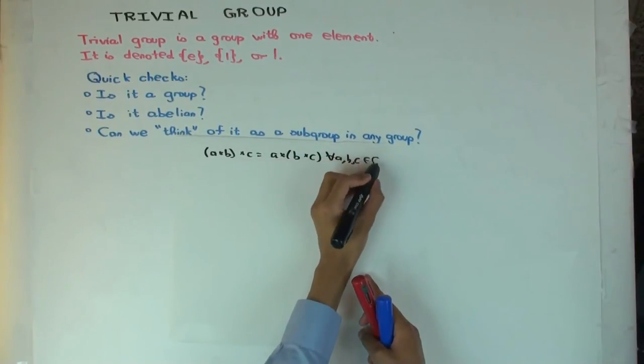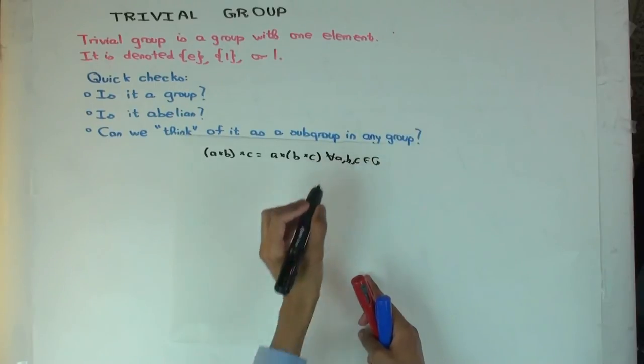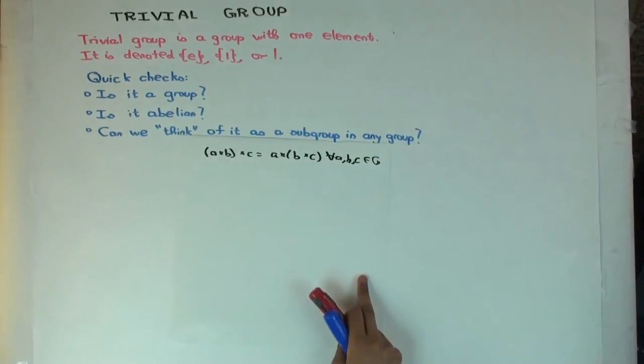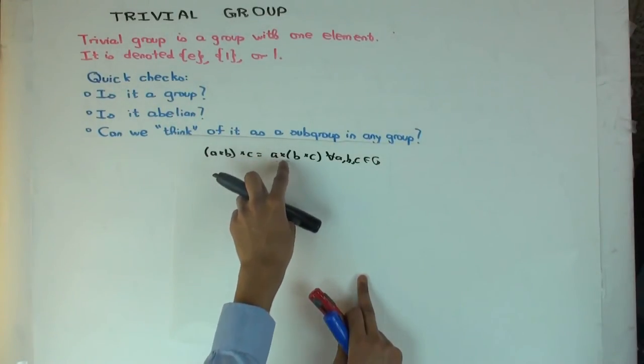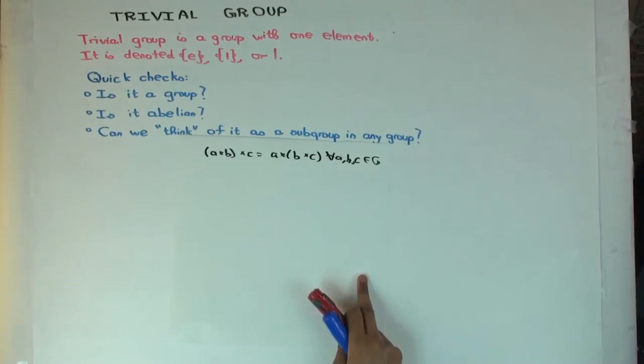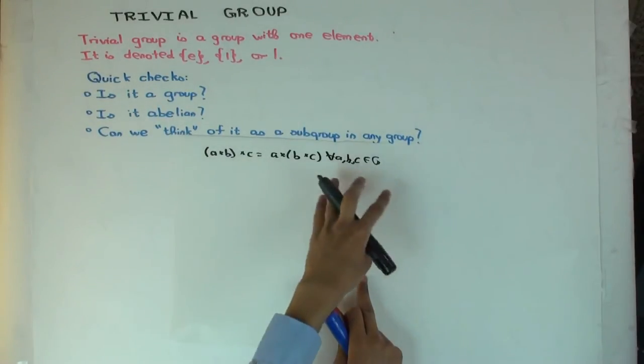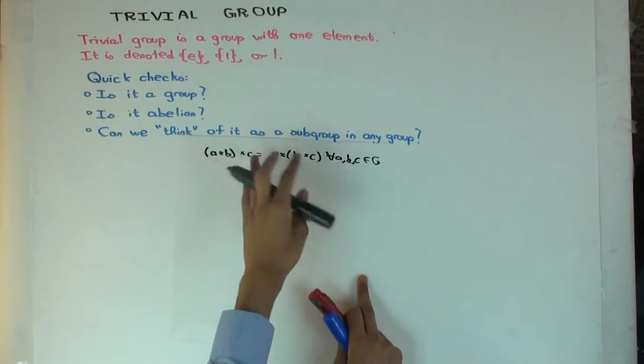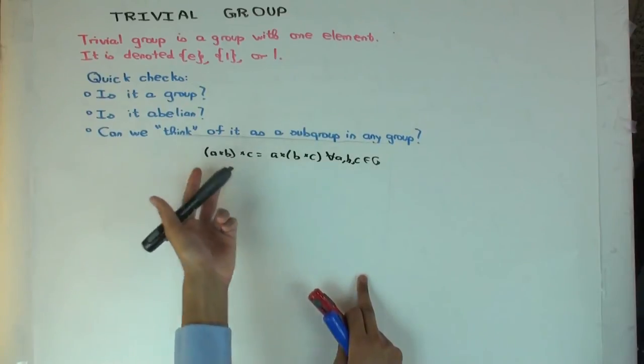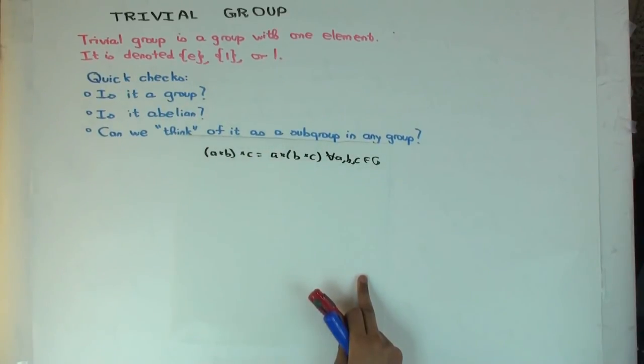Now, what are the possible triples you can pick from the group? The group just has one element, so all of them are e. Is it true that e star e star e equals e star e star e? Yes, because there's only one element in the group. Any two things in the group have to be equal. You don't even have to do the operation - it's just true.